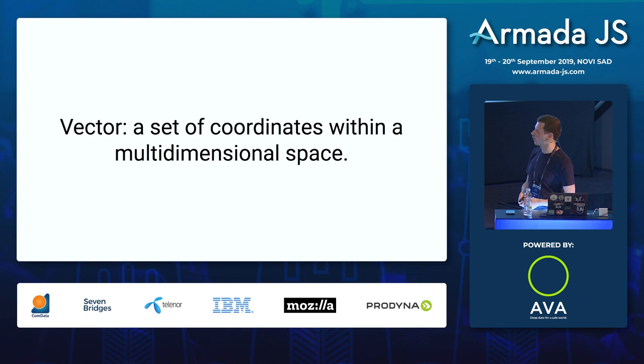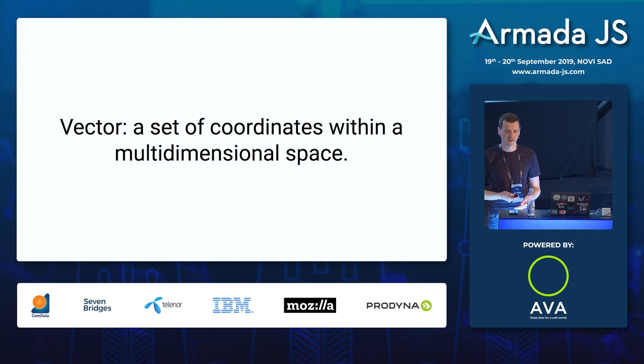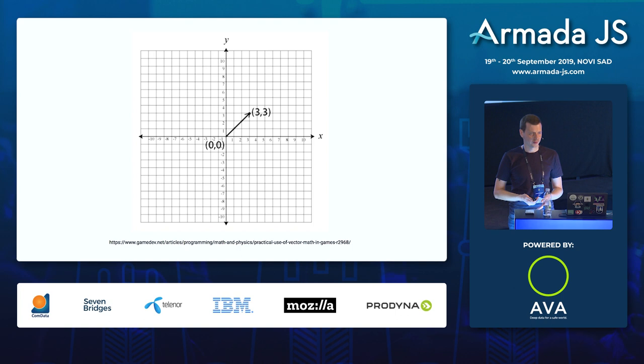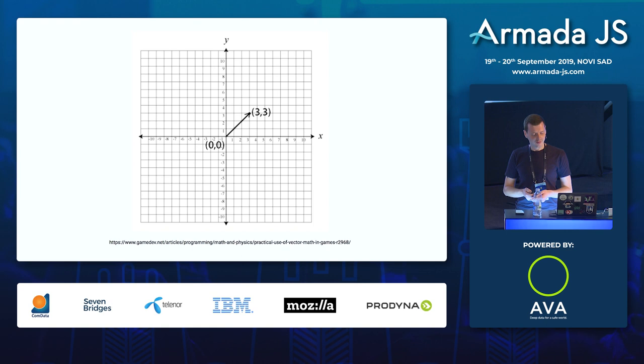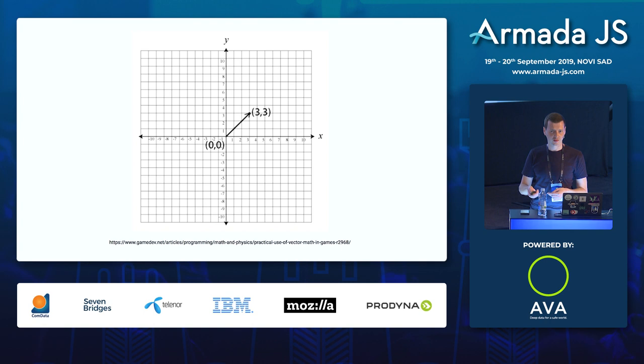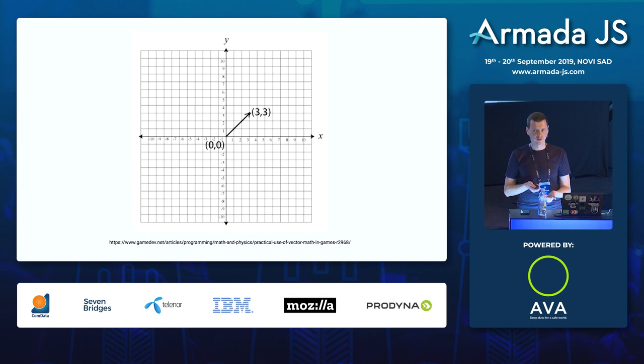Now let's get on to vectors. This is a concept from linear algebra and geometry — reduced down, it's a set of coordinates within a multidimensional space. In Pac-Man we're working in a 2D space. Typically a vector is a collection of two values representing X and Y coordinates. It can represent position, X and Y speeds, directions, and other transformations.